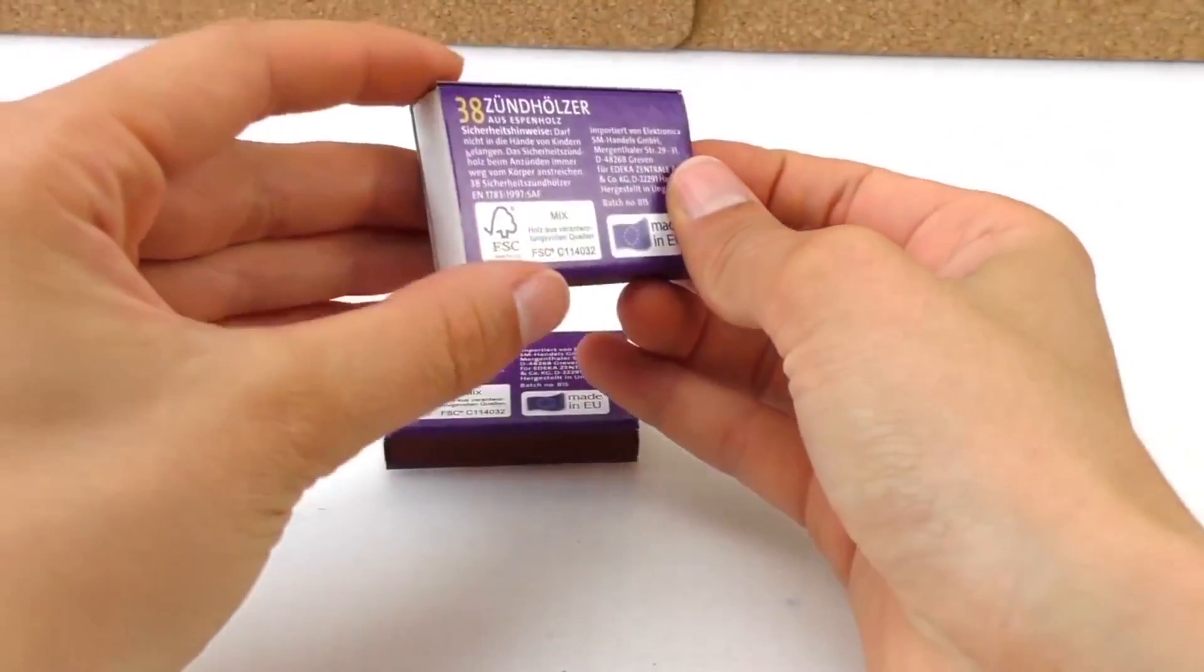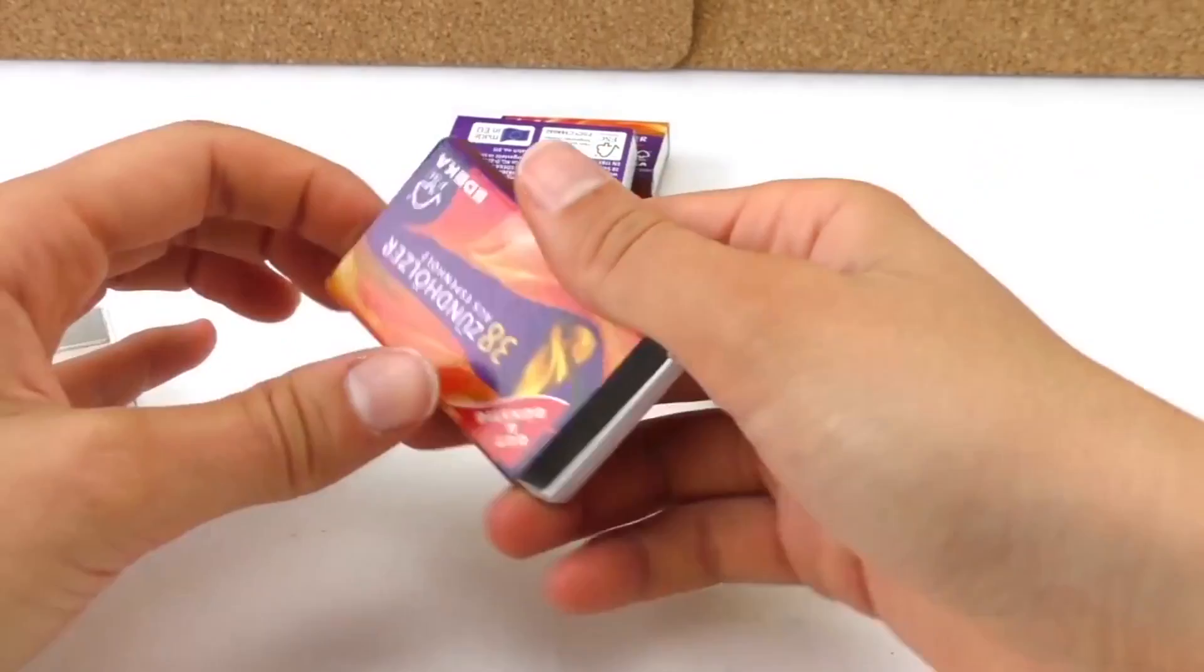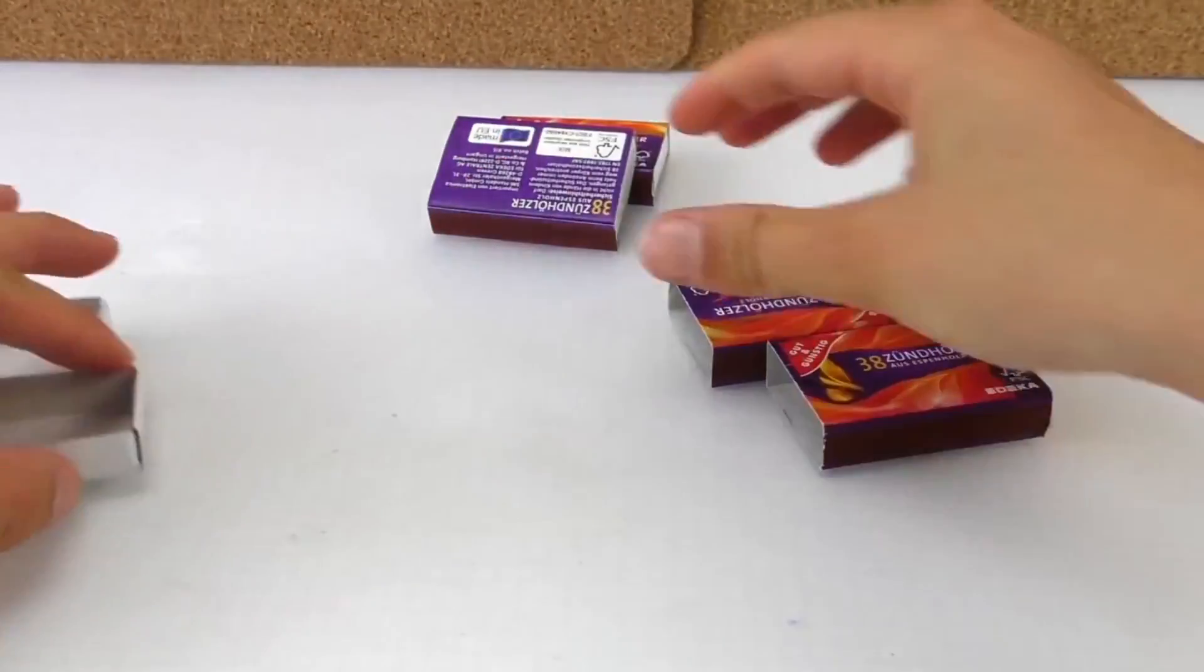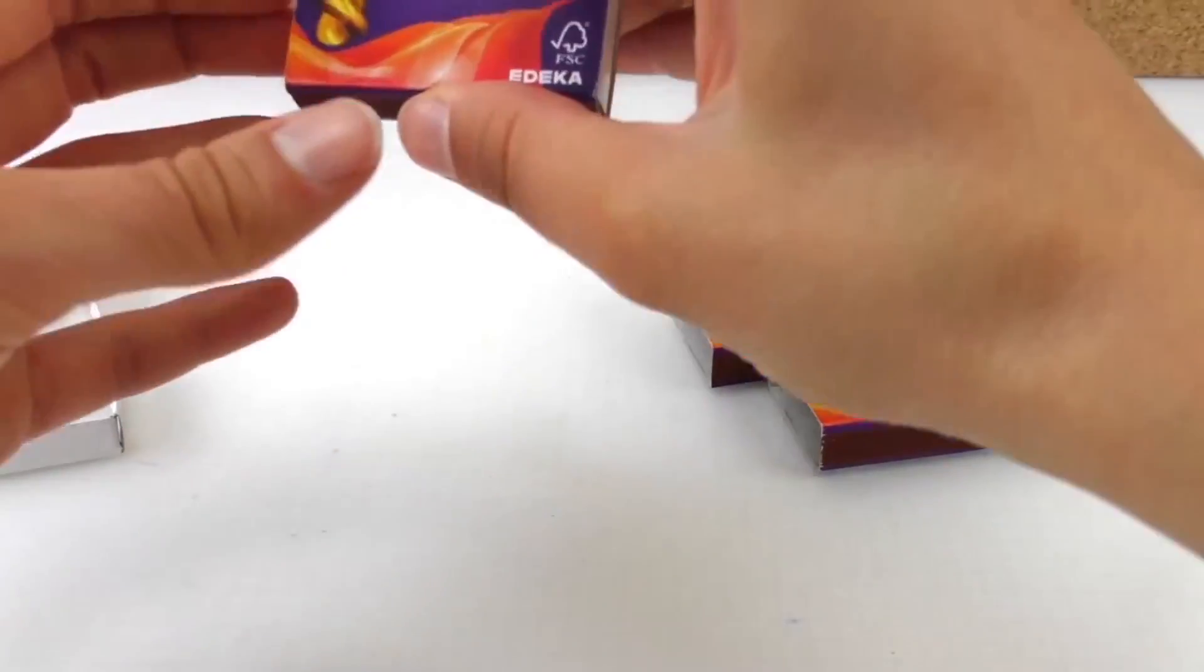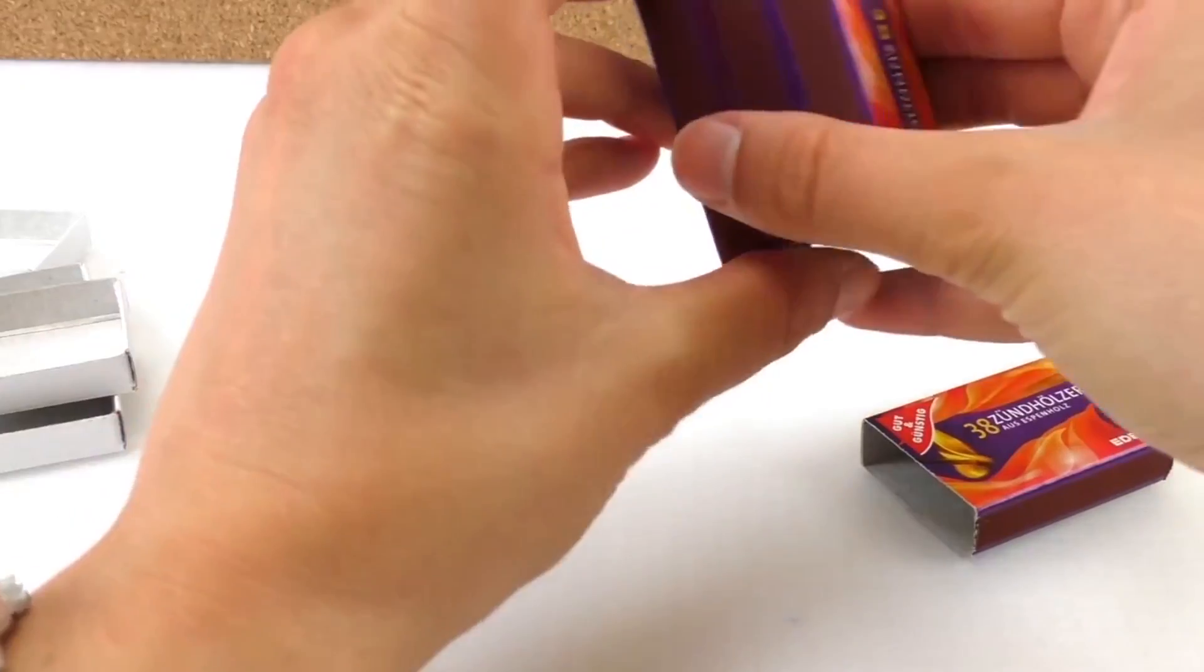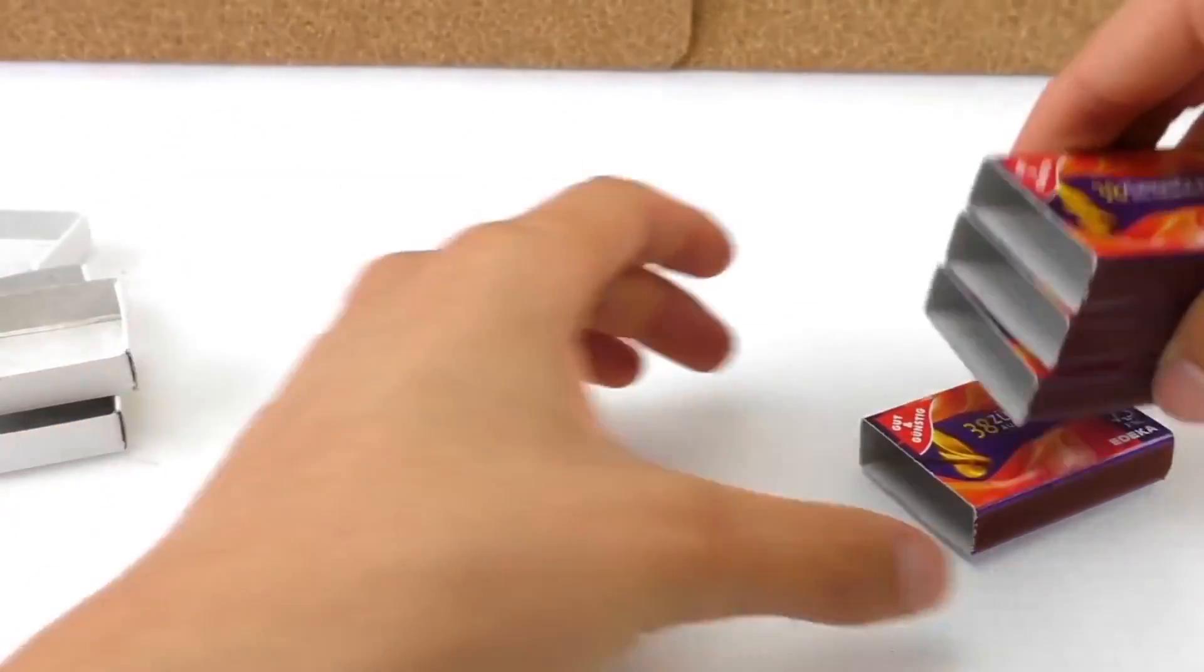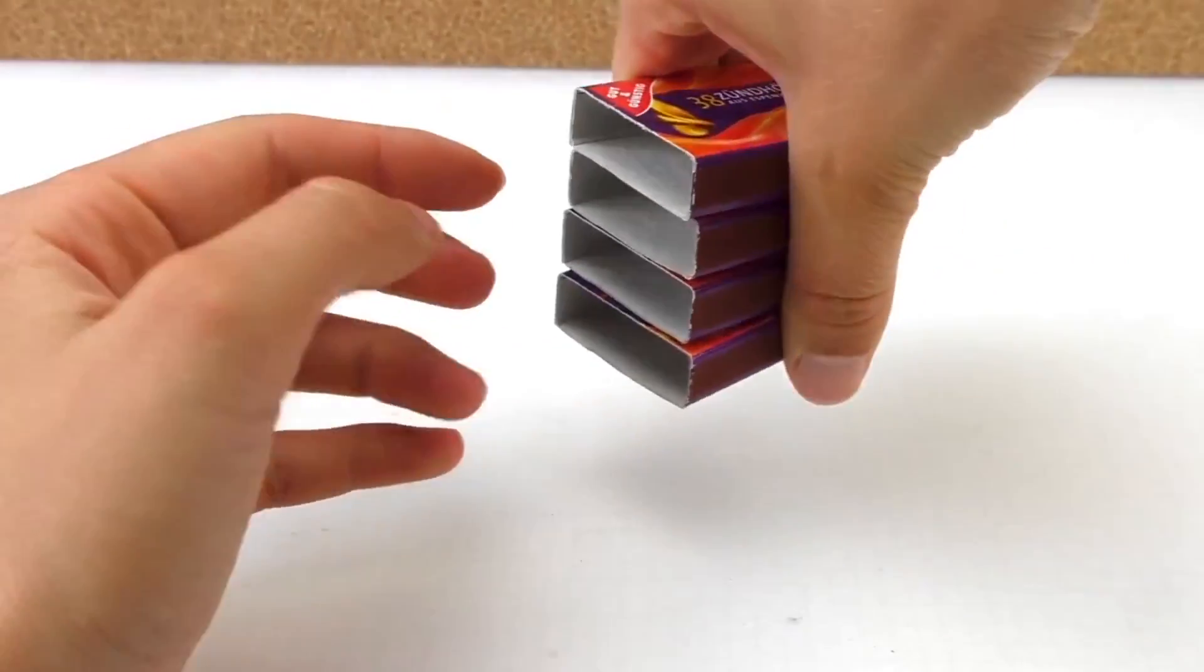So what we're going to do is take all the drawers out and paste them all on top of one another like a little cupboard.